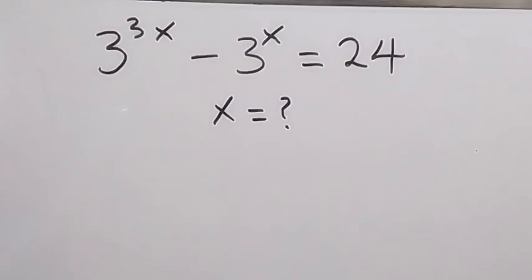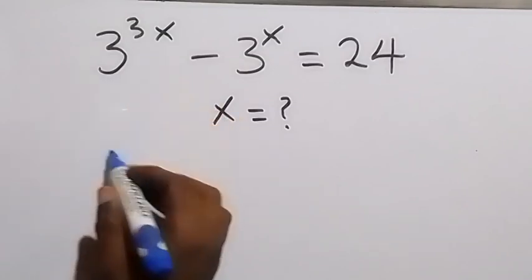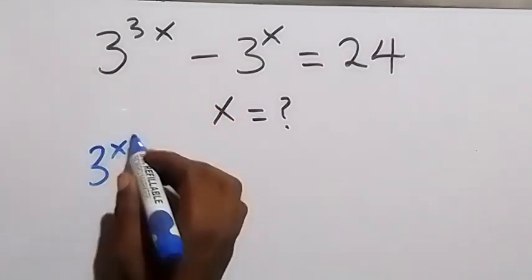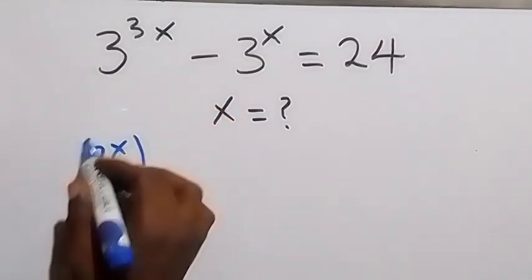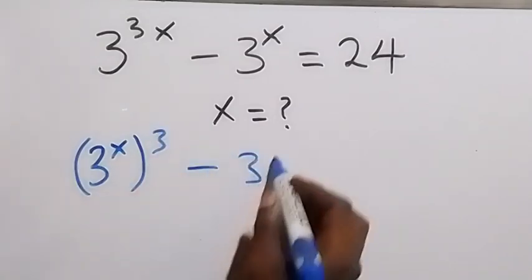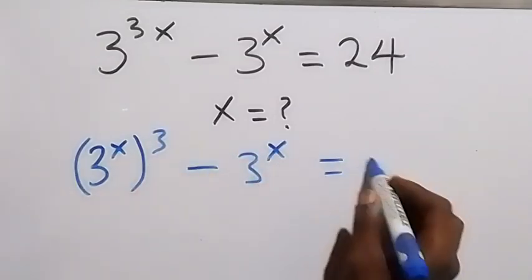Hello, you are welcome. How to solve this nice algebra equation — finding the value of x. We can write this as 3 raised to power x, then raised to power 3, minus 3 raised to power x, equals 24.